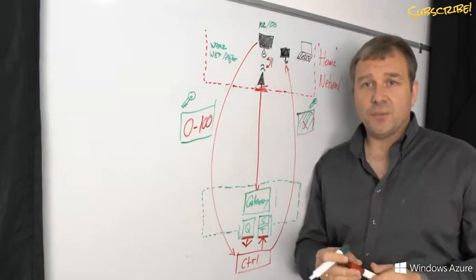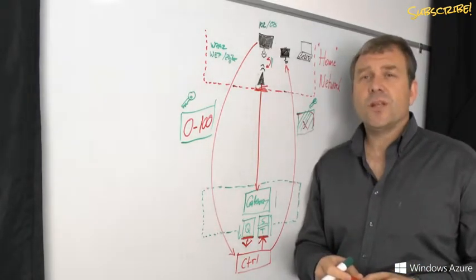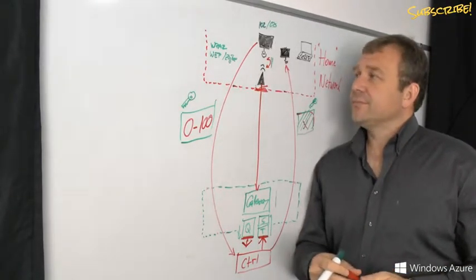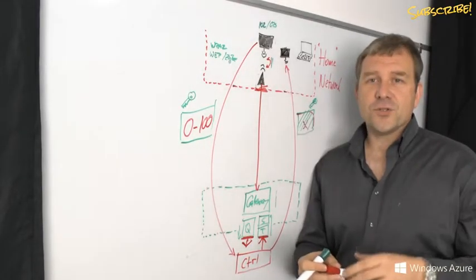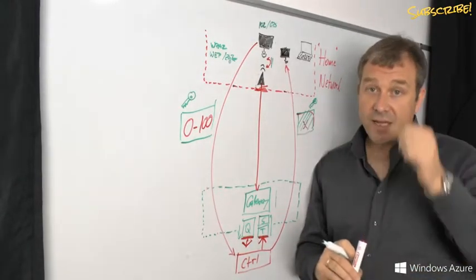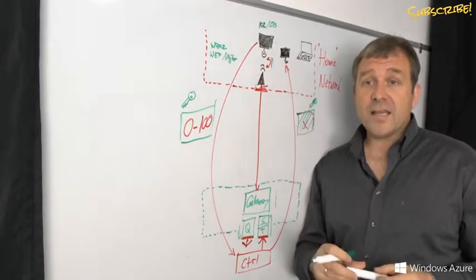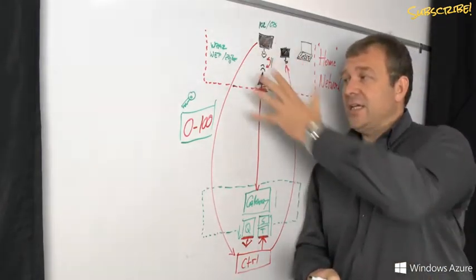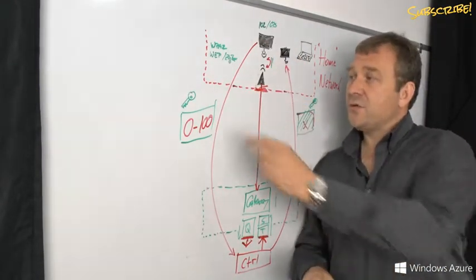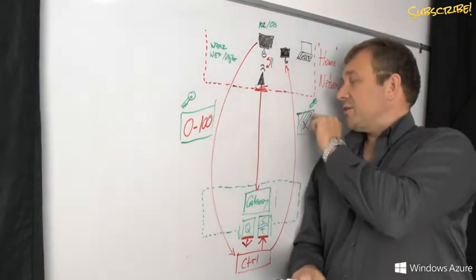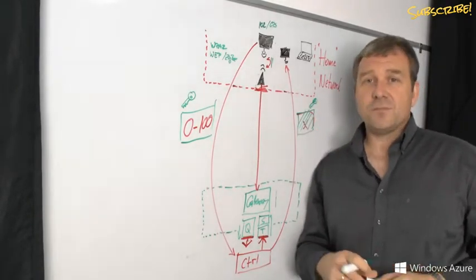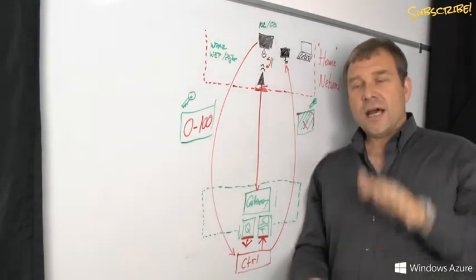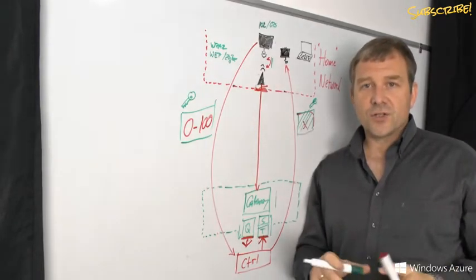But since that device is field deployed, what if it gets stolen and I as an attacker get my hands on it? In that case, I can start forging data because I'm now in possession of a key if that key is shared. What is required is that I can take it, crack it open, and probably read the flash memory out.